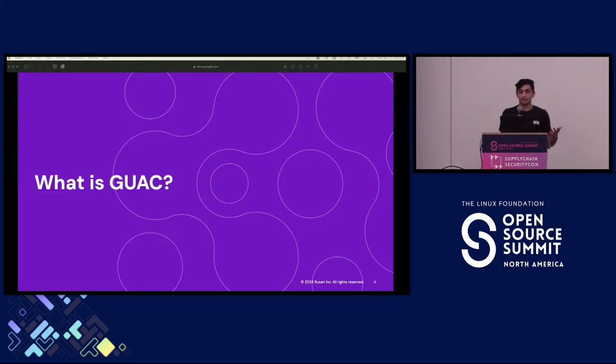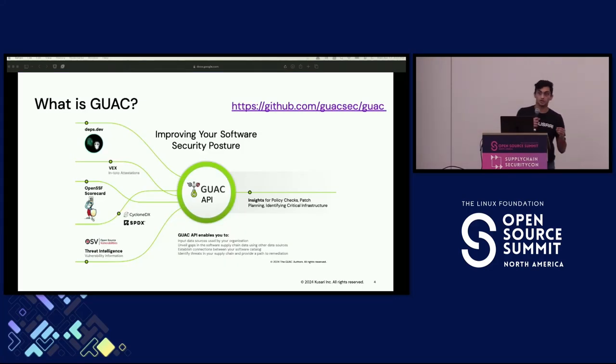So, what is GUAC? GUAC is a project that collects and organizes information about your software based on SBOMs you ingest. We take these SBOMs and create a graph, which you can then use to get a deeper understanding of your software. This allows us to find security vulnerabilities and, in turn, your most risky dependencies.